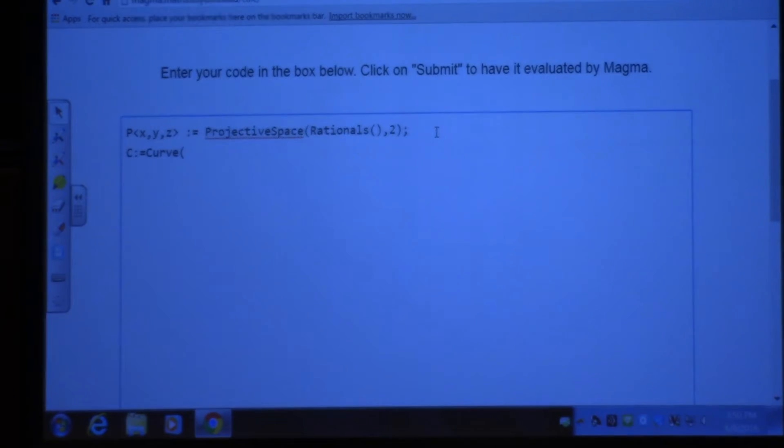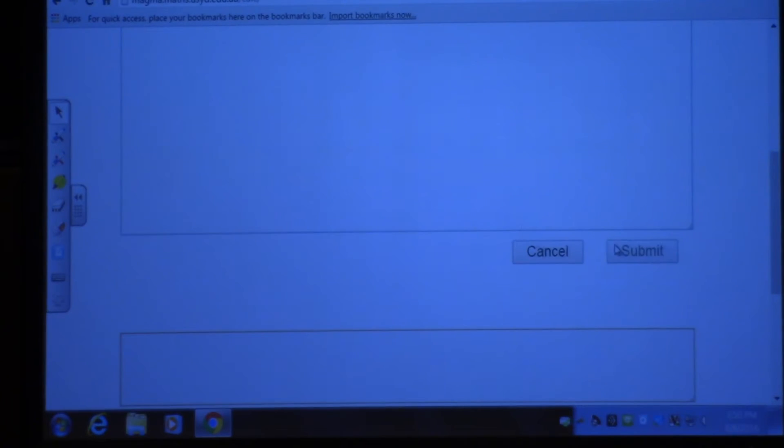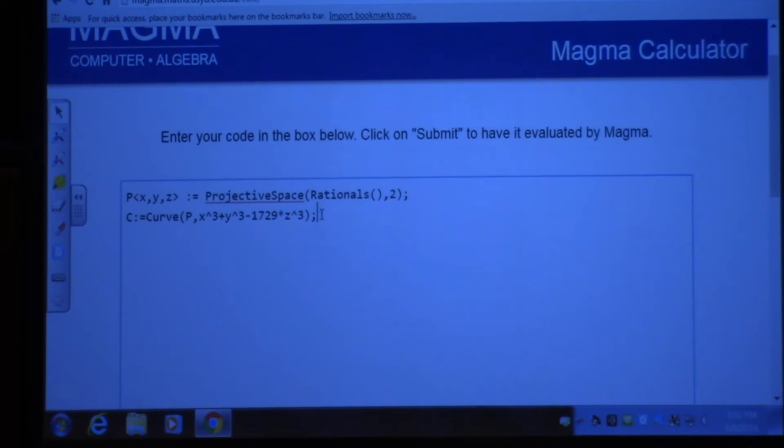I like to submit just to make sure that nothing is wrong. And then I'm going to define a curve over this projective space with that equation. Minus seventeen, twenty-nine, z cubed.